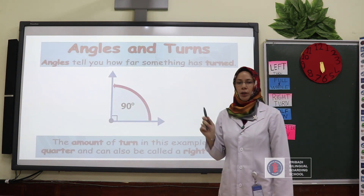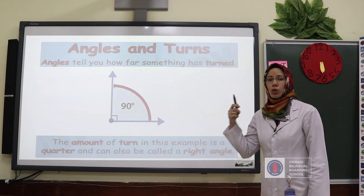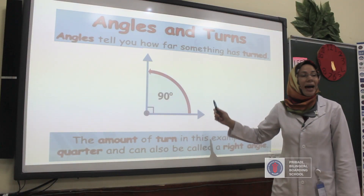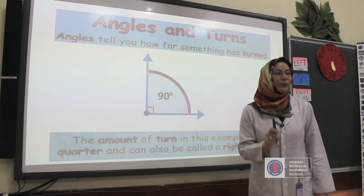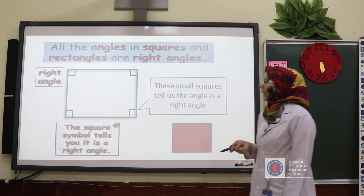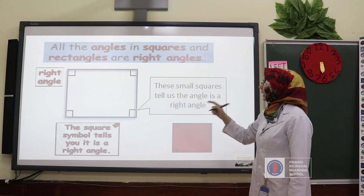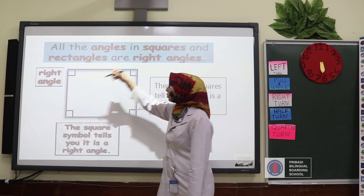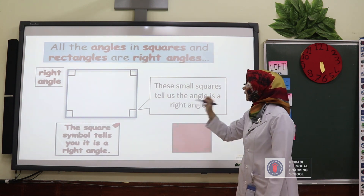Now we will talk about angles and turns. Angles tell you how far something has turned. This shape is a right angle — it has to be 90 degrees. Don't forget: right angle equals 90 degrees. All the angles in squares and rectangles are right angles. You can see here small squares that tell us the angle is a right angle. How many right angles do we have here? One, two, three, four — yes, we have four right angles in the square.